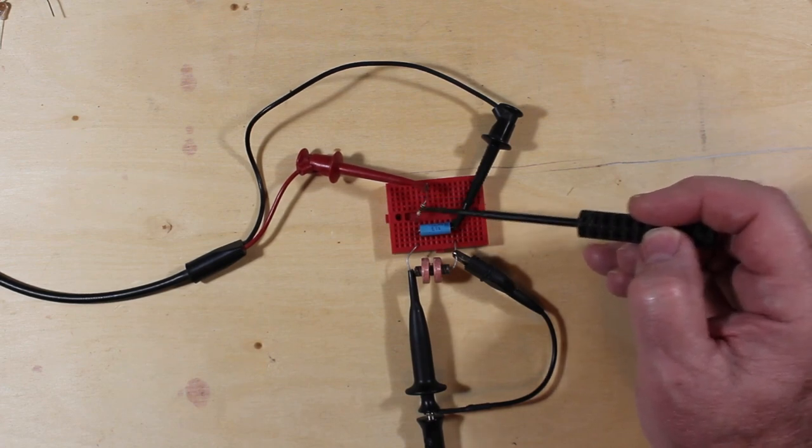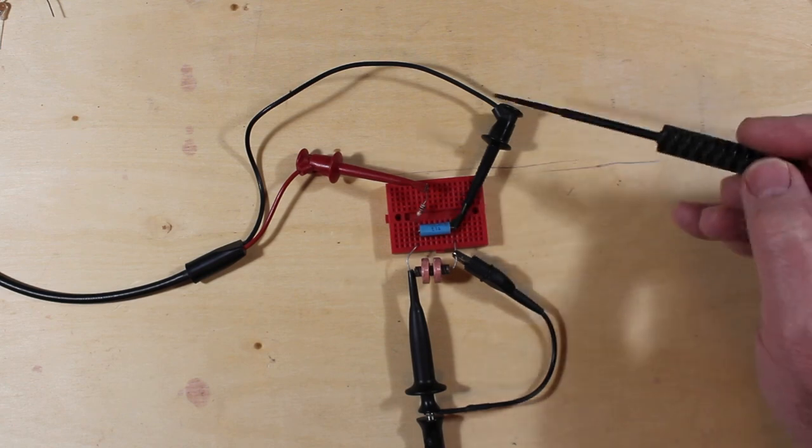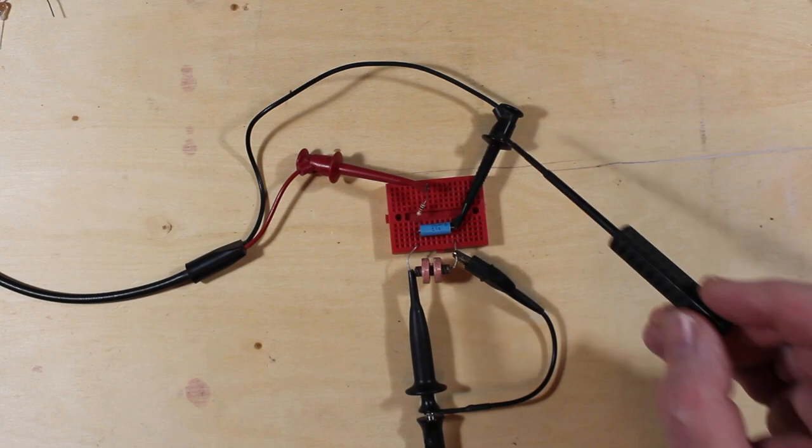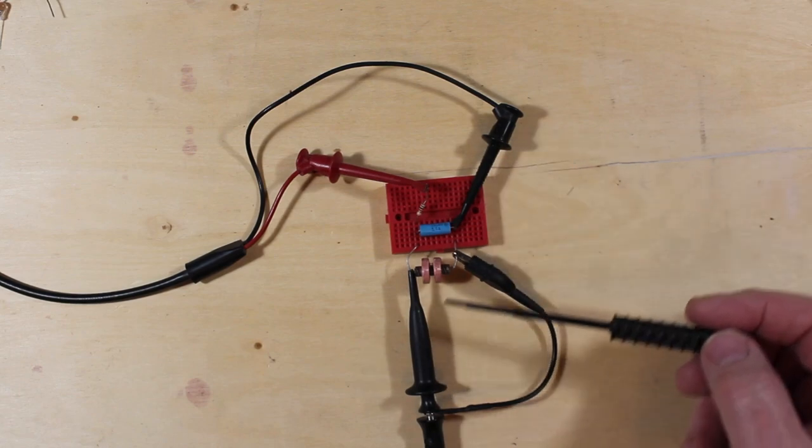And this is a 1K resistor. This is not critical. You could have a little bit smaller, a little bigger, wouldn't make a lot of difference. This is our signal coming in, our test sine wave coming in. And this goes out to the scope.